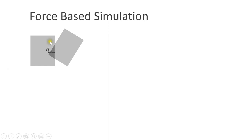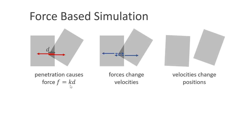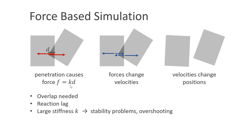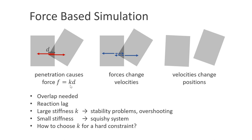Let me first motivate the method. Let's assume we have two bodies that are overlapping with a penetration depth of D. In a force-based simulation, we compute a separating force F, which is proportional to the penetration depth D. They are related via a scalar K, also called the stiffness. When the forces are applied, they change the velocities, and eventually the velocities change the positions. We need an overlap for the bodies to separate, and there is a reaction lag. To make objects look stiff, we need a large stiffness coefficient K. This, however, introduces stability problems and overshooting. Small values of K make the system squishy. A big problem is how to set K to simulate a hard constraint.